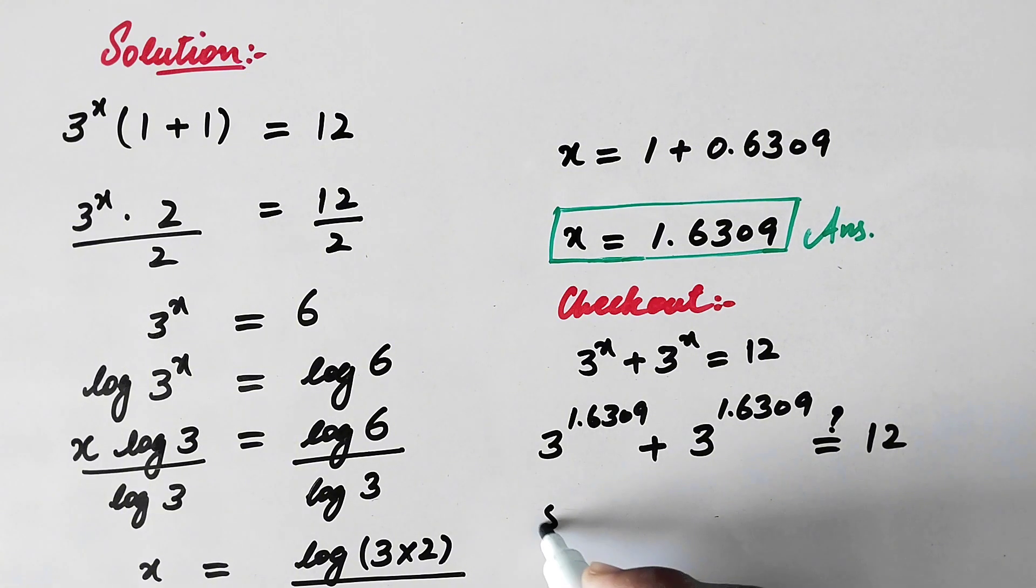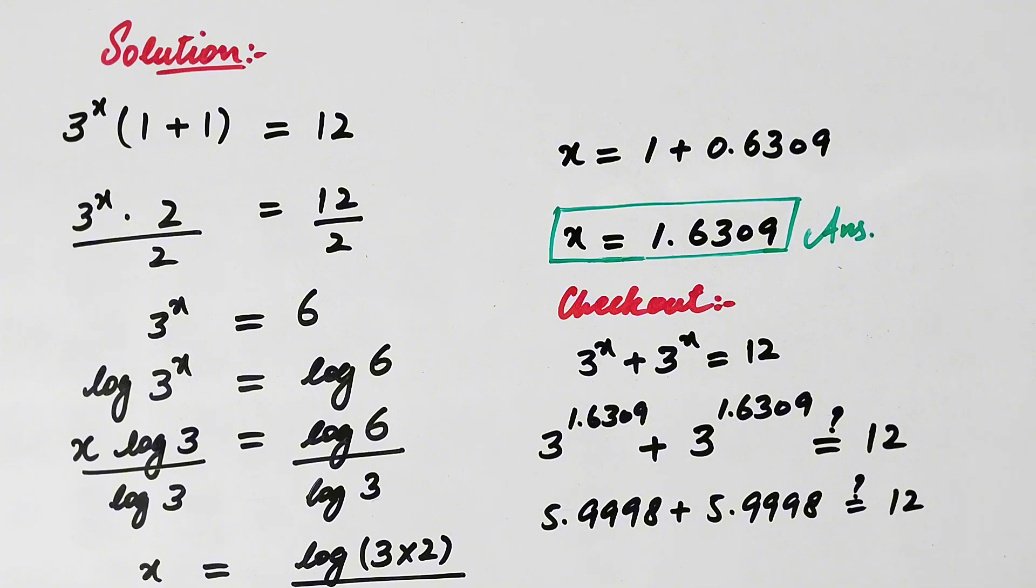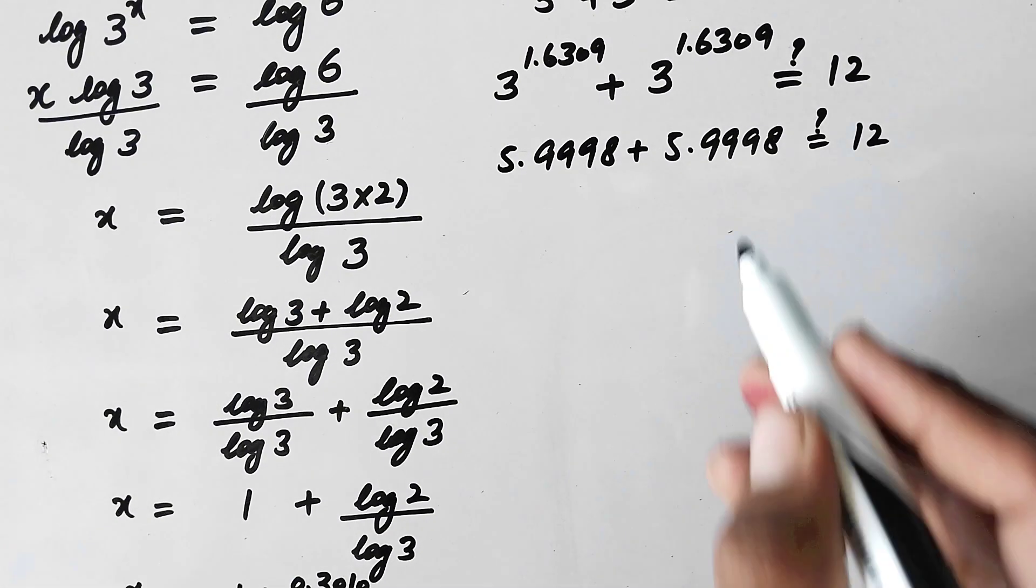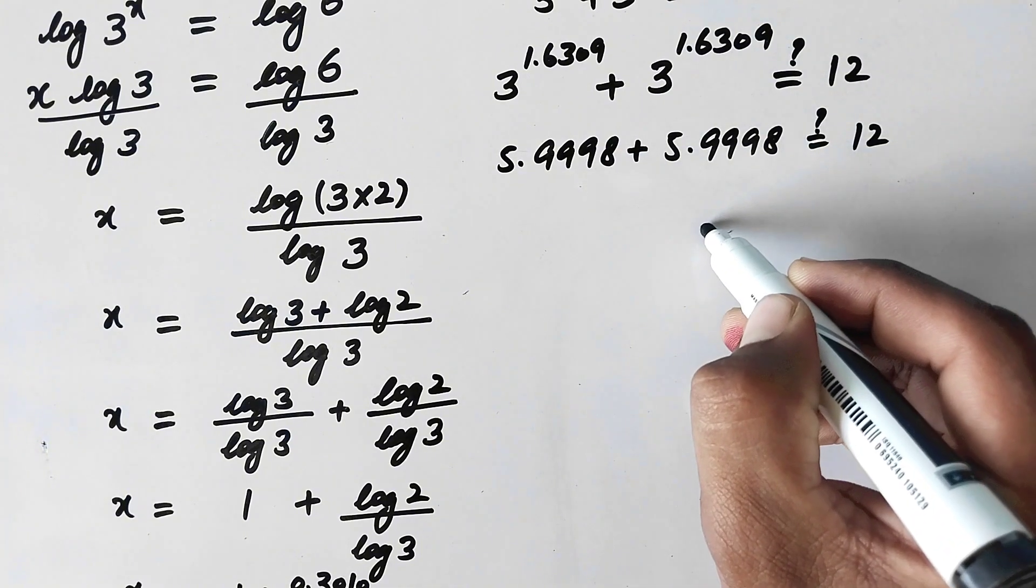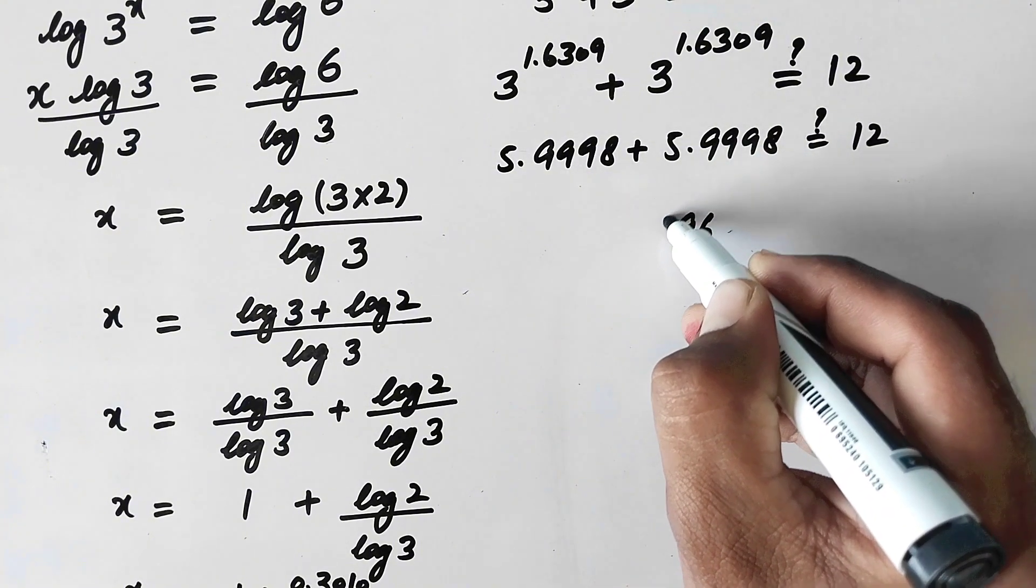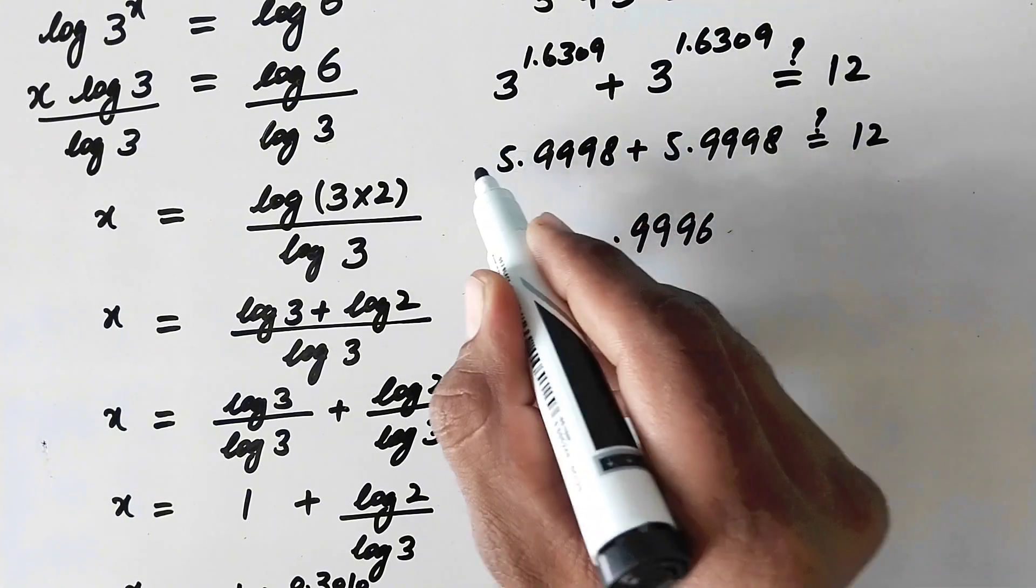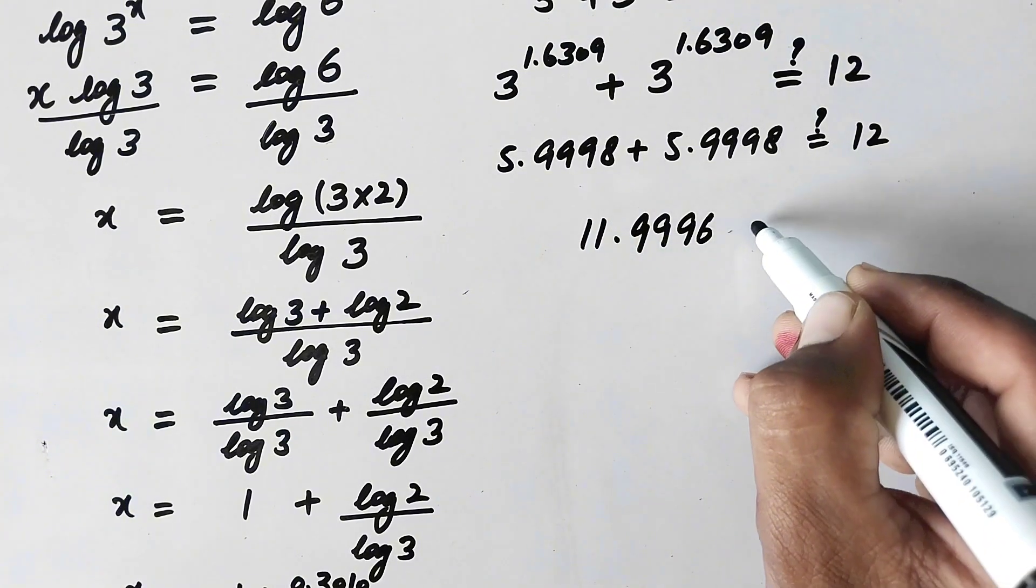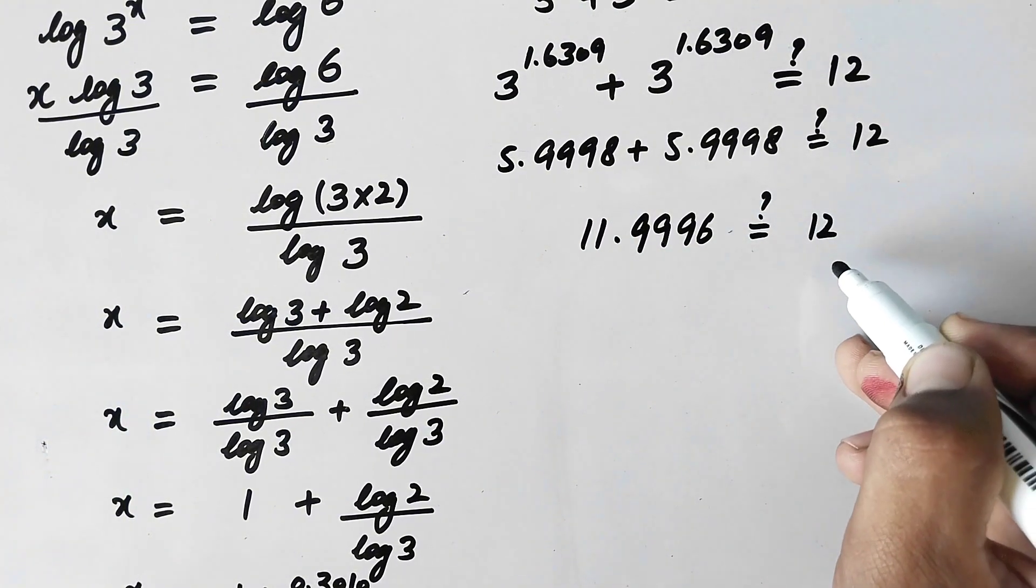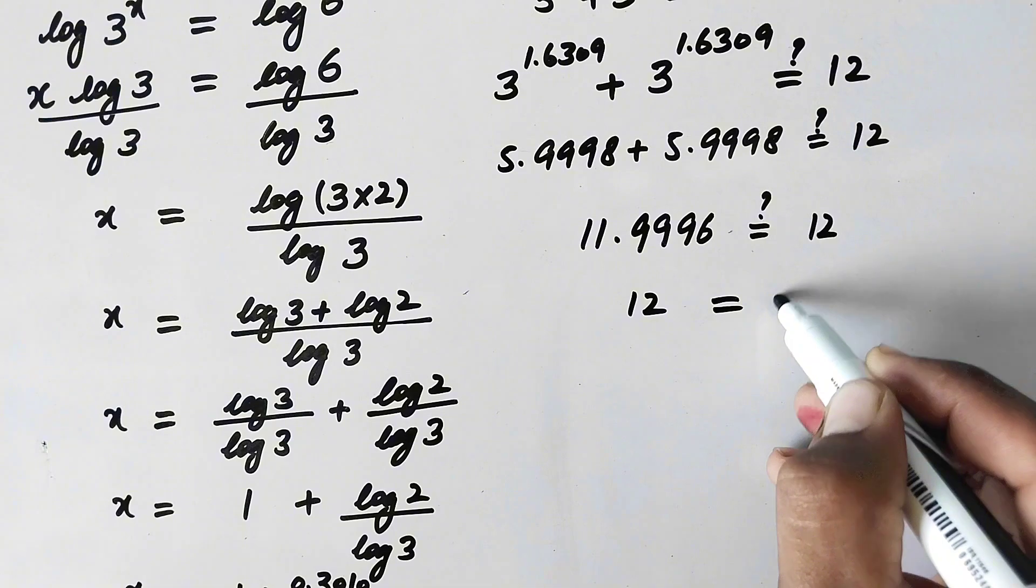That equals 5.9998 plus 5.9998. The sum of them equals 11.9996, and by rounding off it is approximately equal to 12.